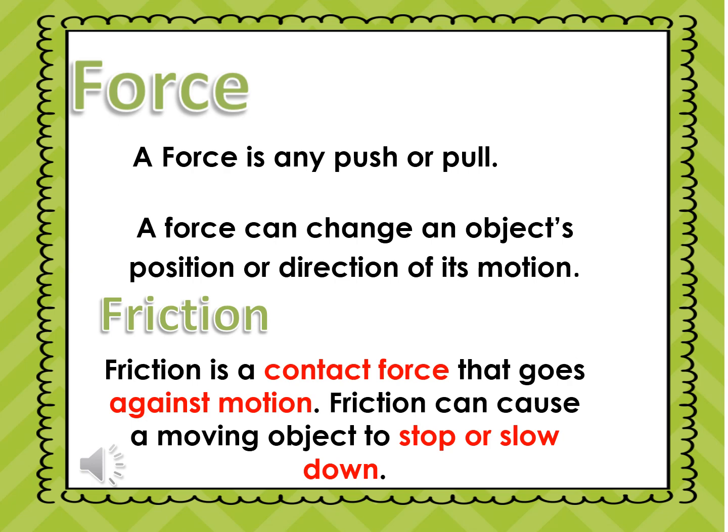When two objects touch or rub against each other, it causes friction. If a bicycle moves faster on a smooth surface, it has less friction. If the bicycle stops or slows down on a grass surface, it has more friction. Guess where you can skate faster — on a smooth surface or on a rough surface? On a smooth surface, because of less friction. It is hard to skate on a rough surface because your skate will stop or slow down due to friction.